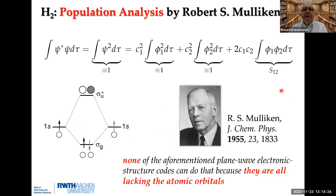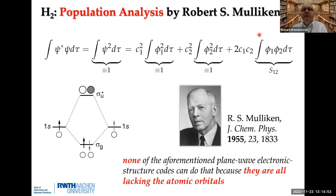So how do you get the chemical bonding information? This was done by Mulliken — probably the first one, in 1955. Let's go back to H2. This is the sigma-g molecular orbital where the two electrons are to be found. If we square-integrate this molecular orbital, it should be unity. It is composed of the contribution of the left atom, the right atom, and the in-between region — giving us the overlap population. This is the mixing coefficients of the two 1s orbitals, the plus-minus information, plus the overlap integral.